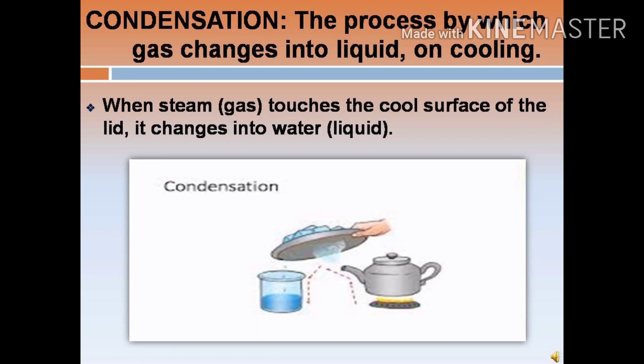Condensation. The process by which gas changes into liquid on cooling is called condensation. When steam, that is in gas form, touches the cool surface of the lid, which has got ice cubes on it, it changes into water, that is liquid form. This process is called condensation.